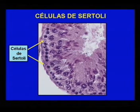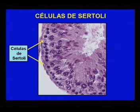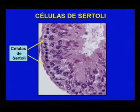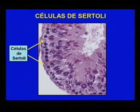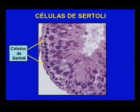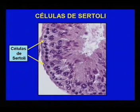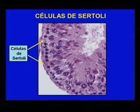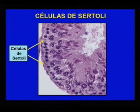Las células de Sertoli no solo sirven de sostén a las germinales, sino que también les garantizan la nutrición. Sintetizan la proteína transportadora de los andrógenos, influenciadas por la FSH, que influye en el proceso de espermatogénesis. Sintetizan también estrógenos y la hormona inhibidora de Müller. Las funciones endocrinas de estas y las demás células del testículo, que durante toda la niñez se encuentran reducidas al mínimo, se exacerban al final de la niñez para dar inicio a la pubertad.